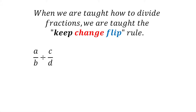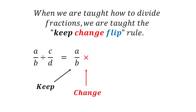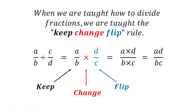If we have the following division A divided by B divided by C divided by D, it means we keep the first fraction the same, we change the division sign into a multiplication sign, and then we flip the second fraction. If we do this we get A divided by B multiplied by D divided by C. We have now turned our original division problem into a multiplication problem. Now multiplying two fractions is easy — it's simply A times D divided by B times C.